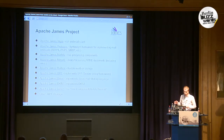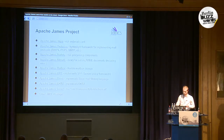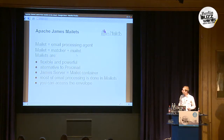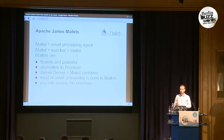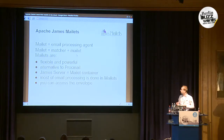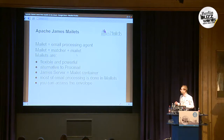These are almost all the components that are part of the James project. I'll get into each a bit and after that move to scale. James mailets are basically what differentiate James from other email servers. Mailets are essentially an email processing agent — a matcher and a mailet. They're a flexible and powerful way to process email, and they are an alternative to procmail.